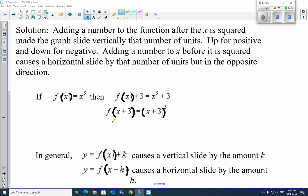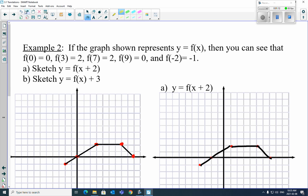OK, now let's look at a basic example. Flip the page there. Example 2: if the graph y equals f of x, you can see the key points here. So here they are. 0, 0. 3, 2. 7, 2. 9, 0.